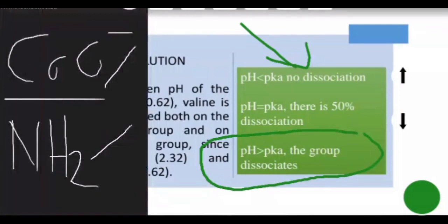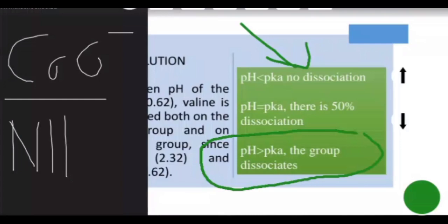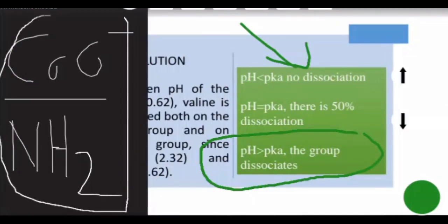When the carboxyl group dissociates, it exists as COO⁻ rather than COOH — it has lost a hydrogen, which is the meaning of deprotonated. When the amine group is deprotonated, it exists as NH₂ rather than NH₃⁺ — it has also lost a hydrogen. That is the meaning of dissociation for these groups.